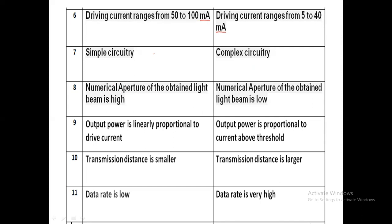Numerical aperture is the maximum light-gathering capability. For LED, the value of numerical aperture is high compared to laser, where the numerical aperture of the obtained light beam is low. Output power in LED is linearly proportional to the drive current, whereas in laser the output power is proportional to current above the threshold level. The transmission distance for LED is smaller, because the output level is low and non-coherent, whereas laser has high directionality and can travel longer distances.